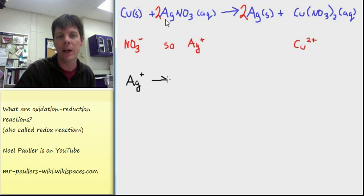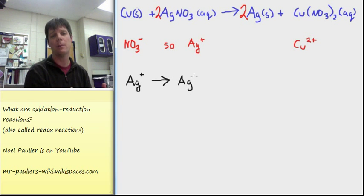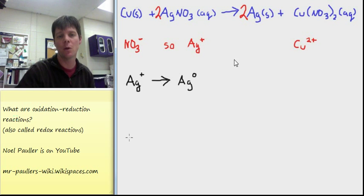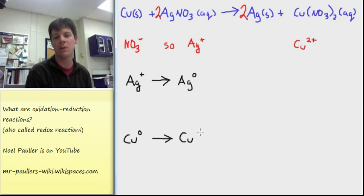Silver starts out here with a plus one charge. However, after the chemical change, it's all by itself. It's in its pure elemental state. There it will have no charge at all. So it goes from being positively charged to being neutral. The copper goes from being in its pure elemental state, so it has no charge here, to having a positive two charge after the chemical reaction has taken place.